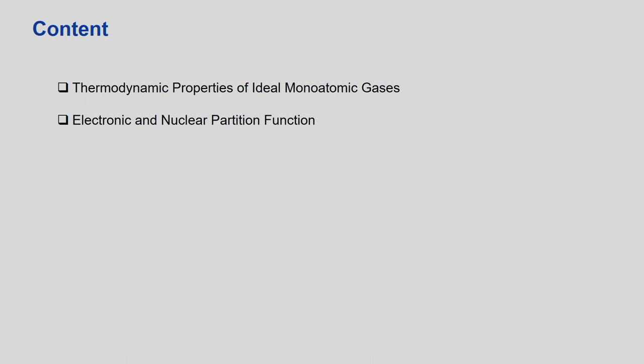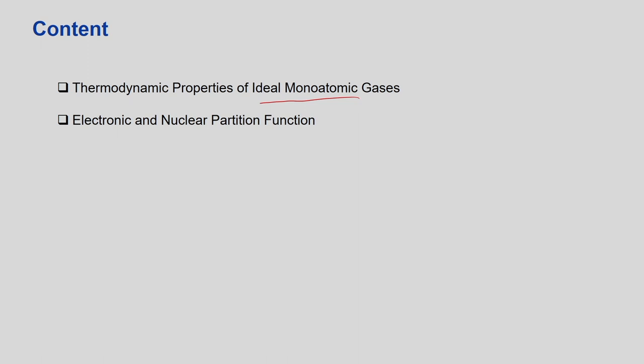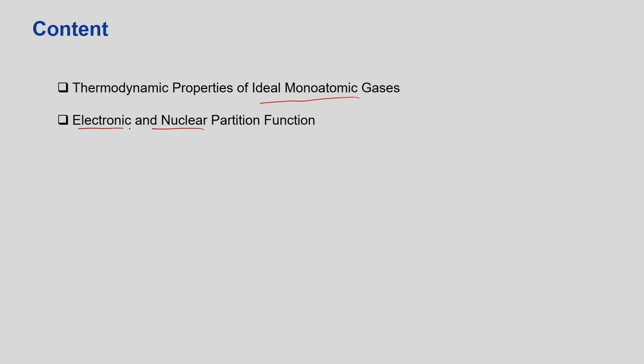We will cover thermodynamic properties of ideal monoatomic gas. It need not be mentioned that if it is a monoatomic gas it will be ideal, because all the atoms are not interacting with each other. We have talked about the translational partition function and found that if there are different energy modes—translational, rotational—you just take the product of them. Now we focus on the electronic and nuclear partition function, leaving aside vibrational and rotational, which only exist when there is bond formation, which is absent in monoatomic gas.